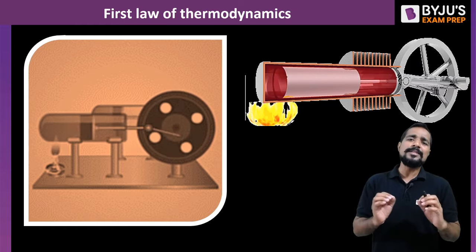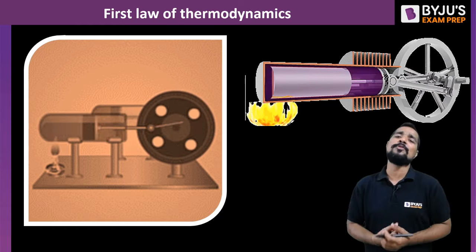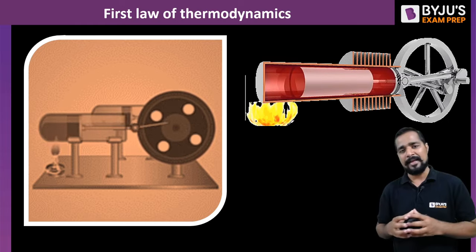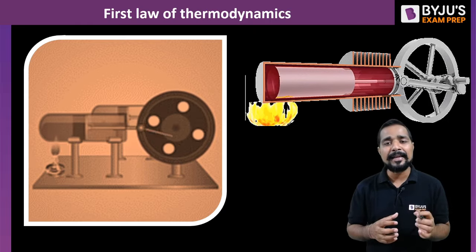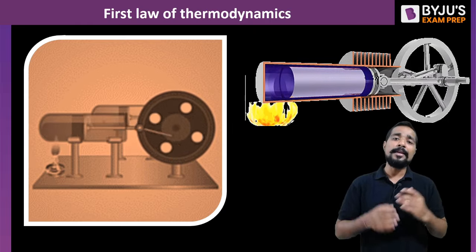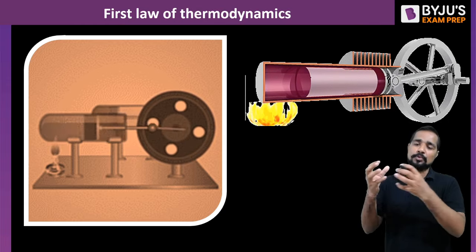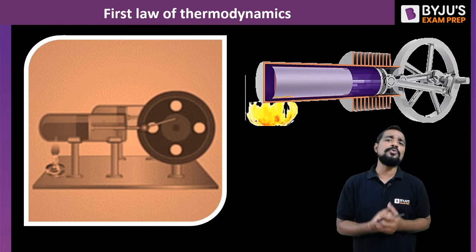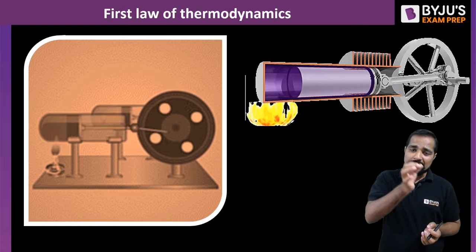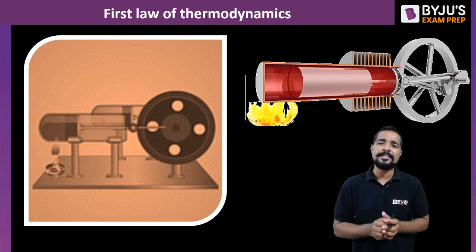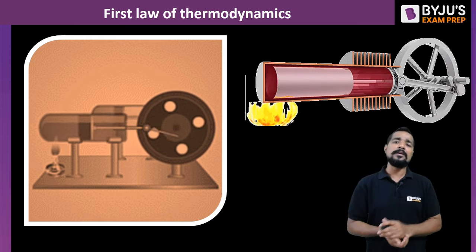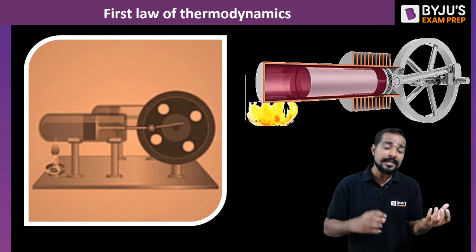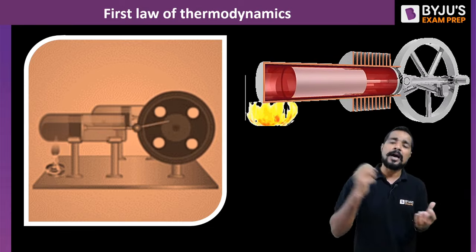Let's try to understand what exactly the first law of thermodynamics is. The first law of thermodynamics is also known as the equivalence of work to heat, or equivalence of mechanical energy to thermal energy. It is going to tell you the relationship between thermal energy — or low-grade energy — and mechanical work — or high-grade energy. Heat is generally known as low-grade energy, and work is known as high-grade energy.